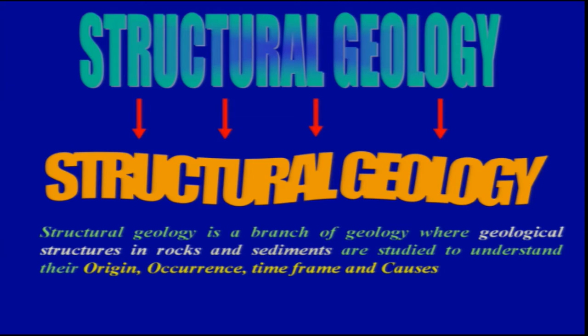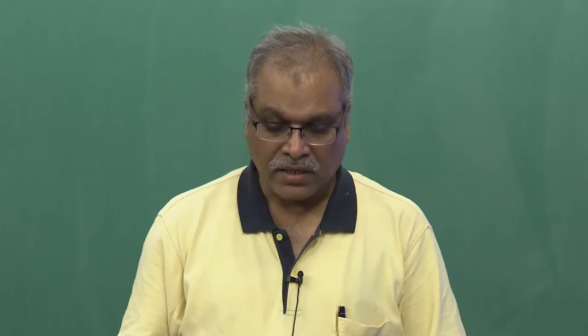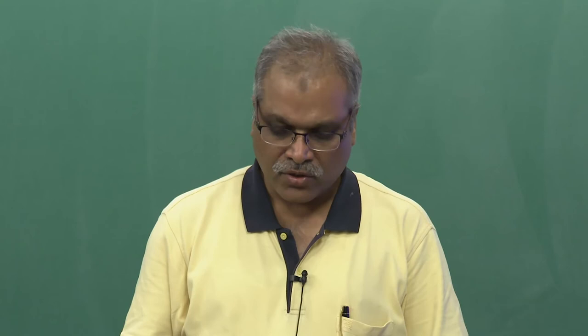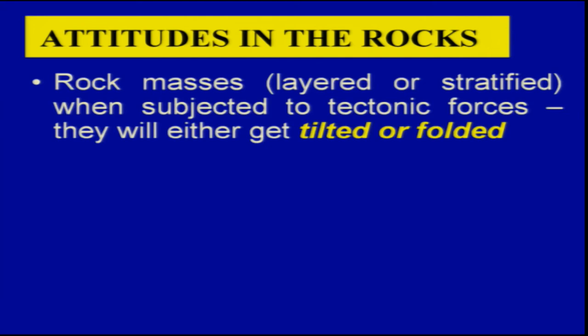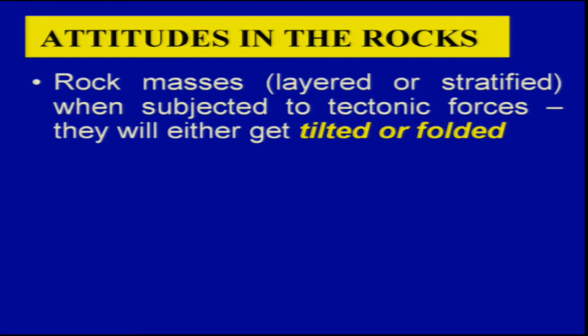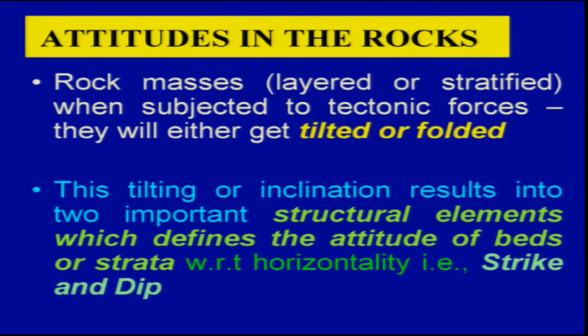Now it is important to discuss the attitudes of rocks. Each rock or sediment succession will have some attitude. When rocks are tilted or folded, we describe their attitudes — mainly the direction in which they are oriented, how much they are tilted, and in which direction. Rock masses or layered strata, when subjected to tectonic forces such as plate tectonics and deformation, will either tilt or get folded.